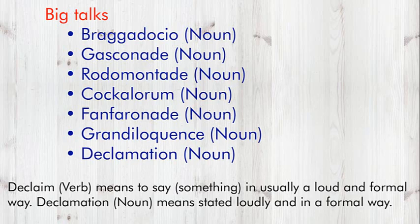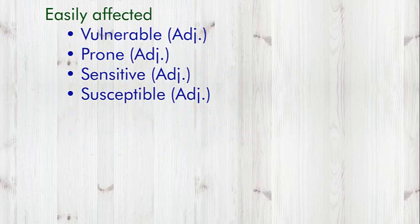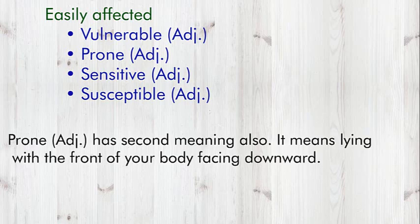Easily Affected: Words used for easily affected are Vulnerable (Adjective), Prone (Adjective), Sensitive (Adjective), and Susceptible (Adjective). Prone (Adjective) has a second meaning also — it also means lying with the front of your body facing downward.